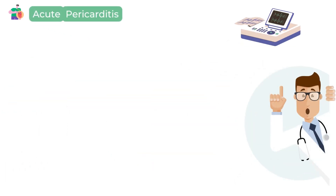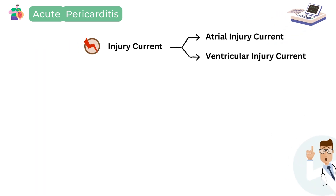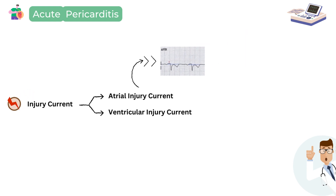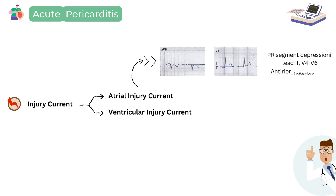Let's understand what the basis is for the ECG changes in pericarditis. There are believed to be injury currents, similar to an MI. During acute pericarditis, there are typically two distinct injury currents: atrial and ventricular. The atrial injury current is directed upwards and to the right, toward AVR. Therefore, in acute pericarditis, there would be PR segment elevation in AVR. We are talking about an atrial injury current, and conversely, there would be PR segment depression in lead 2, leads V4 to V6, and it could extend onto other anterior and inferior leads as well.